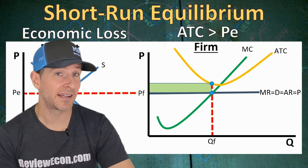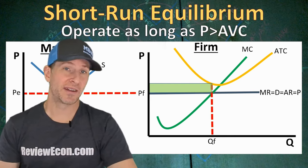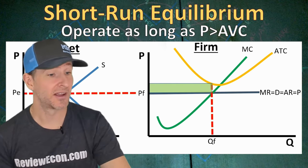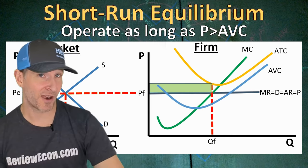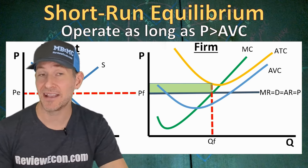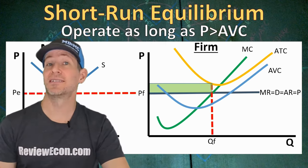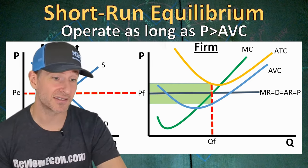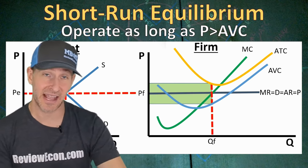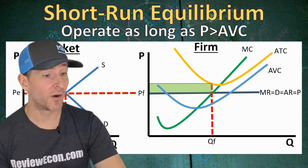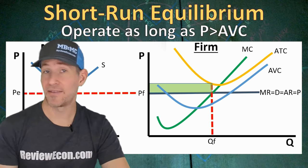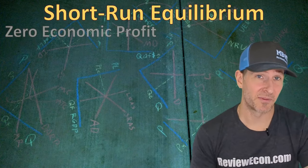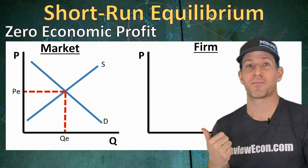You could calculate the area of that rectangle to find the amount of economic loss. As a reminder, this firm will continue to operate at a loss as long as the price is greater than the average variable cost. At the profit-maximizing quantity, the price is above the AVC, so this firm actually loses less money by operating. If they shut down, they lose their fixed cost — the gap between ATC and AVC brought to the axis. By continuing to operate, they only lose the smaller economic-loss rectangle, which is less than their total fixed cost.